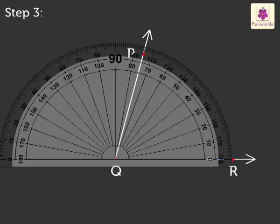Step 3. Count from 0 degrees on the right side as ray QR points to the right side.